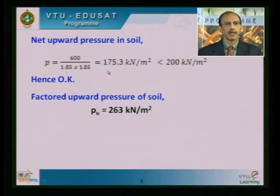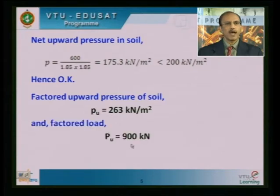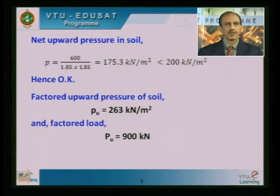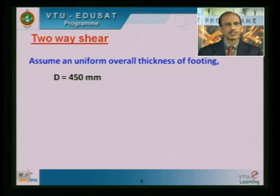Since we are using the limit state method, we factor the loads and the pressure acting beneath the foundation. I multiply the pressure developed by 1.5 to get the factored upward pressure of soil, which gives 263 KN per meter square. Similarly, the given load of 600 KN multiplied by 1.5 gives a factored load of 900 KN. The next part is to provide adequate depth for the foundation and proper reinforcements at the base so that the foundation is safe against shear and flexure.